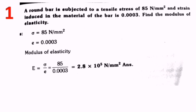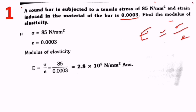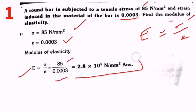Let's look at the first problem. Read the question twice and thrice to understand what is given and what to find. A round bar is subjected to a tensile stress of 85 N/mm². The strain induced in the bar is 0.0003. Find the modulus of elasticity. E = σ/ε, where σ = 85 N/mm² and ε = 0.0003. So modulus of elasticity = 85 / 0.0003, hence the answer is 2.8 × 10⁵ N/mm².